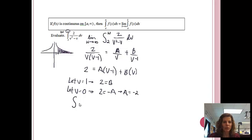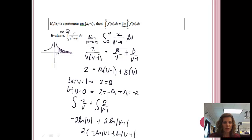Now we can get the integral of negative 2 over v plus the integral of 2 over v minus 1. When we do that, we will have negative 2 natural log of v plus 2 natural log of v minus 1. From here, I am going to turn that into one integral. Since they both have a 2, I can factor out a 2. So this is going to be 2 times negative natural log of v plus natural log of v minus 1.